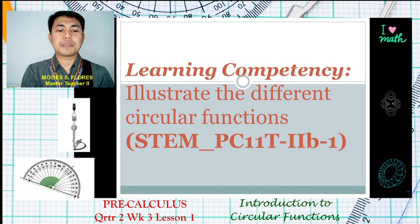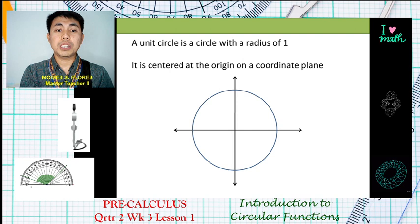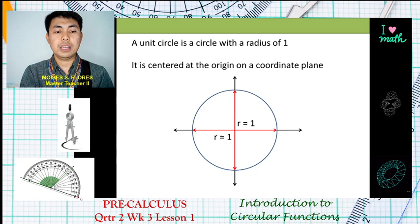Before that, let us first discuss the concept of the unit circle. A unit circle is said to be a circle with a radius of one unit, and it is usually centered at the origin on a coordinate plane, as you can observe on our diagram here.